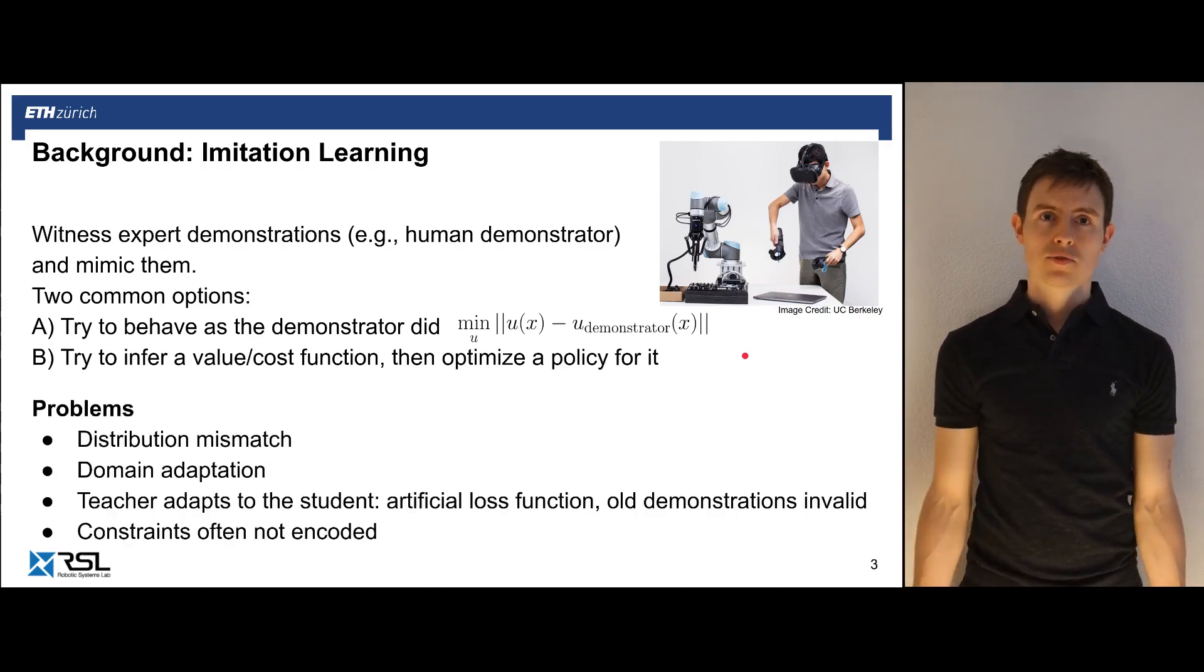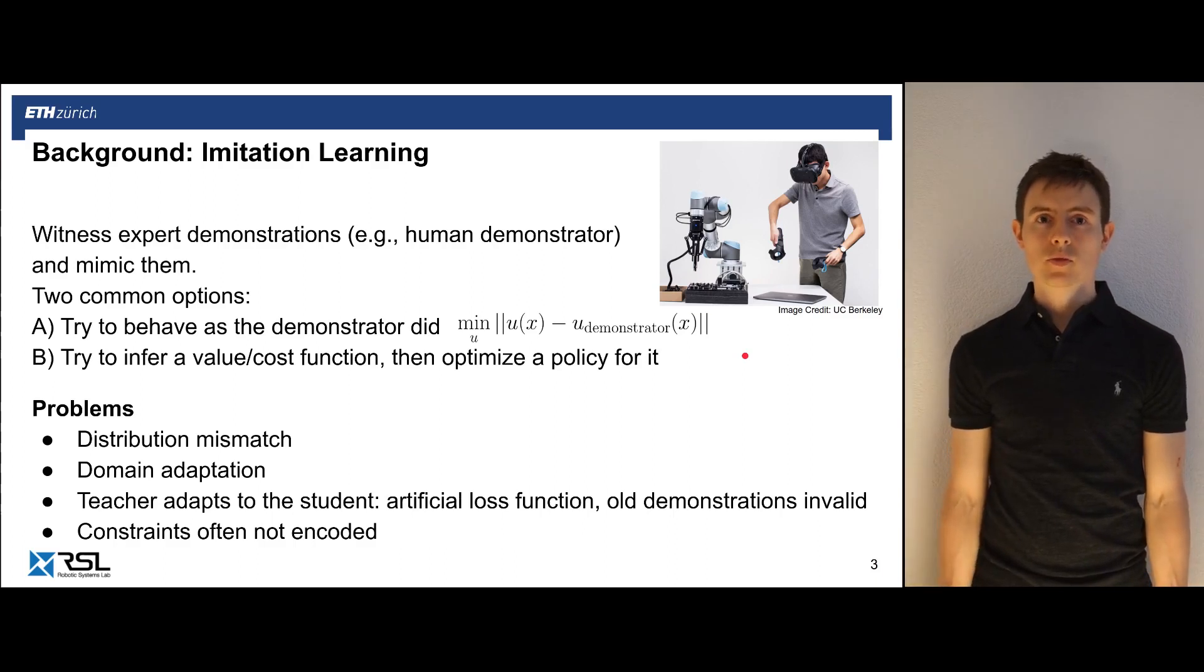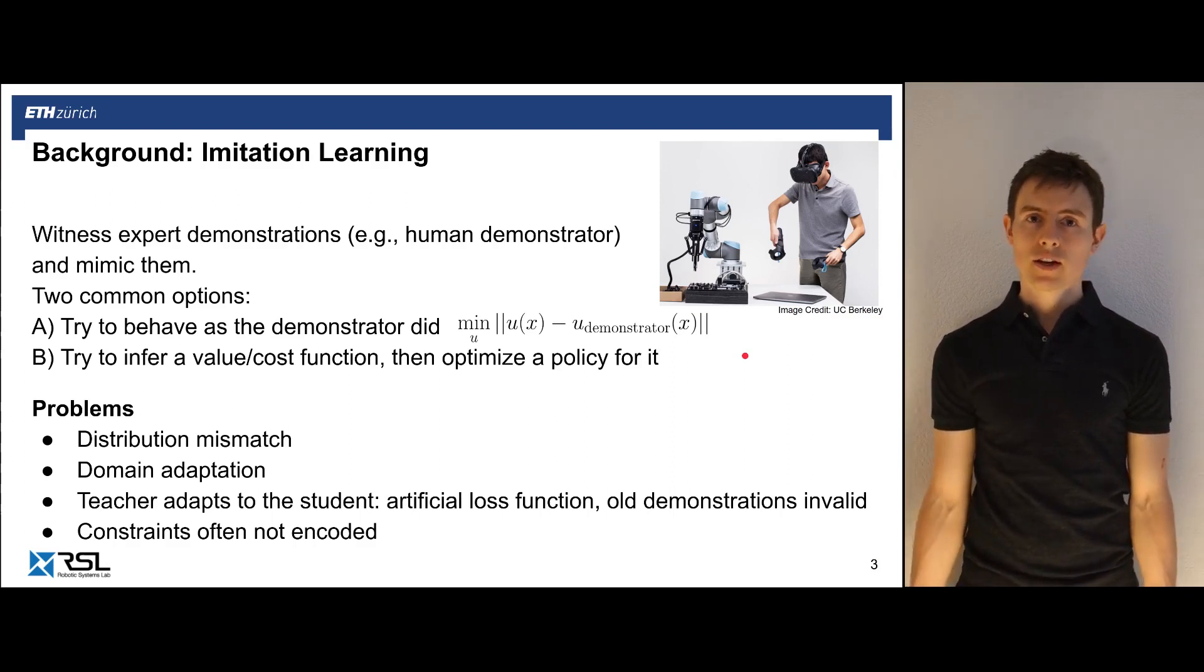There are a number of difficulties with imitation learning. For example, there is typically a distribution mismatch of states that are shown by the demonstrator and those states that are actually encountered by the policy that is learned. Also, there is often a domain adaptation to overcome because the body of the demonstrator is not the same as the body of the learner, which might be a robot. Furthermore, in many setups, the teacher or the demonstrator actually adapts to the current progress of the learner. So the teacher demonstrates something that is closer to the current policy of the learner, which makes the demonstration of the expert not optimal anymore. Therefore, all demonstrations are typically not valid anymore and cannot be reused for learning the current policy. Finally, there is often no direct encoding of constraints in an imitation learning setup.